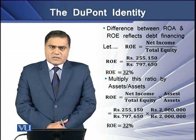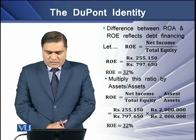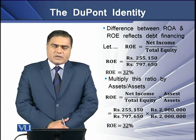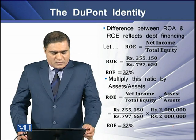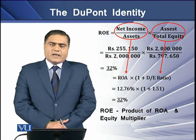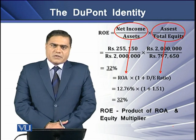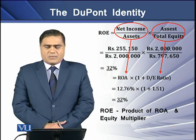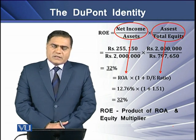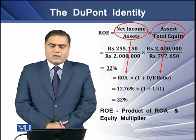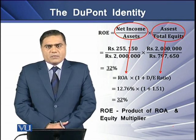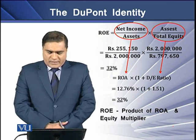If we multiply this ratio by assets over assets, the result would be the same — 32%. But this time we call it as return on equity being the product of return on assets and the equity multiplier, or return on assets multiplied by (1 + debt-to-equity ratio), which is another name for the equity multiplier.